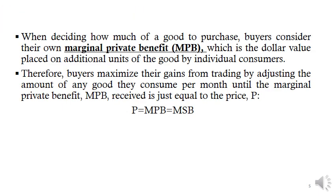Both buyers and sellers seek to maximize their gains from trading in perfectly competitive markets. Buyers maximize the satisfaction they obtain from exchanging money for goods and services, while sellers maximize the profits they earn. When deciding how much of a good to purchase, buyers consider their marginal private benefit — the dollar value placed on additional units by individual consumers. Buyers maximize gains by adjusting consumption until marginal private benefit equals price. Therefore: price = marginal private benefit = marginal social benefit.